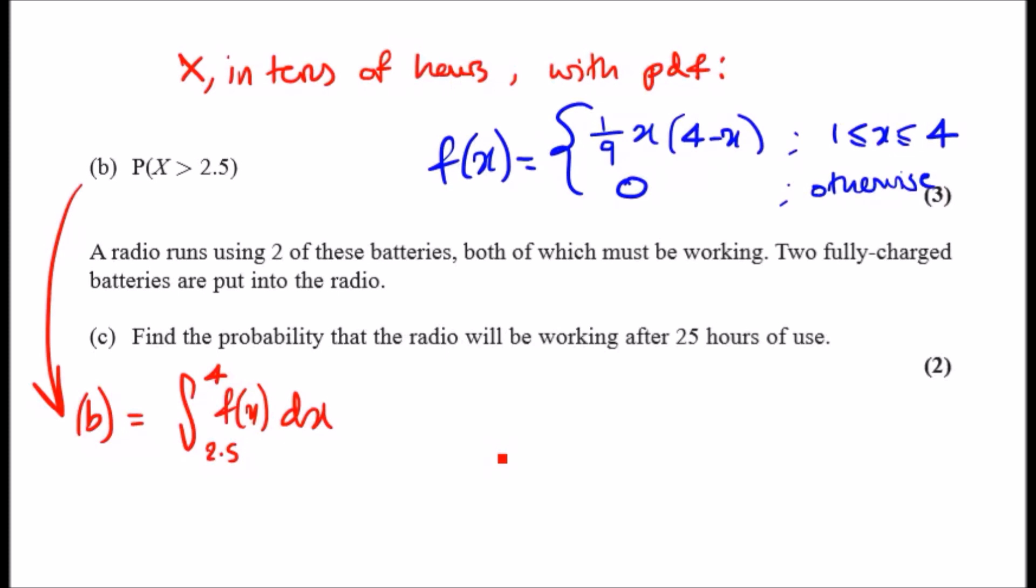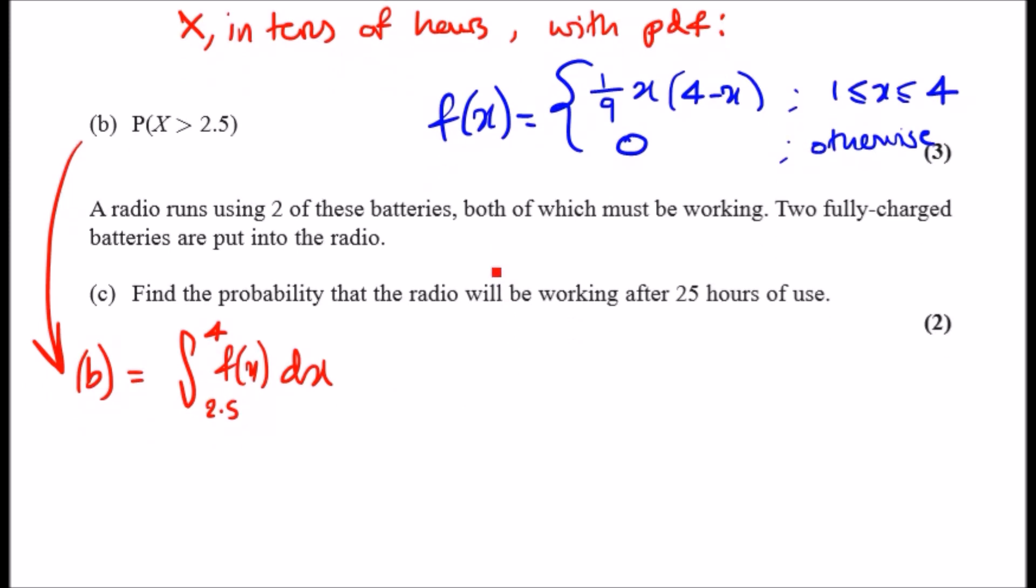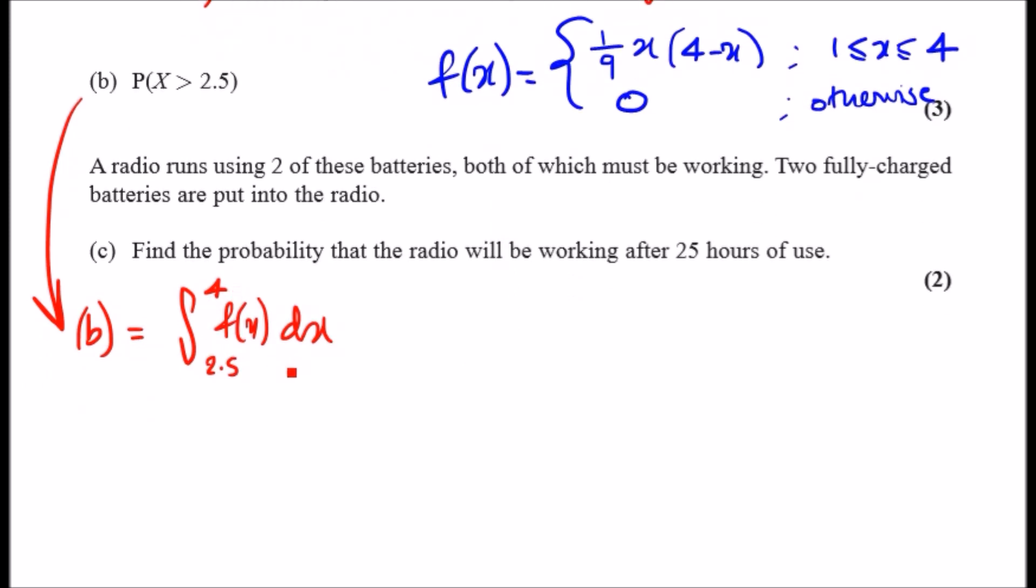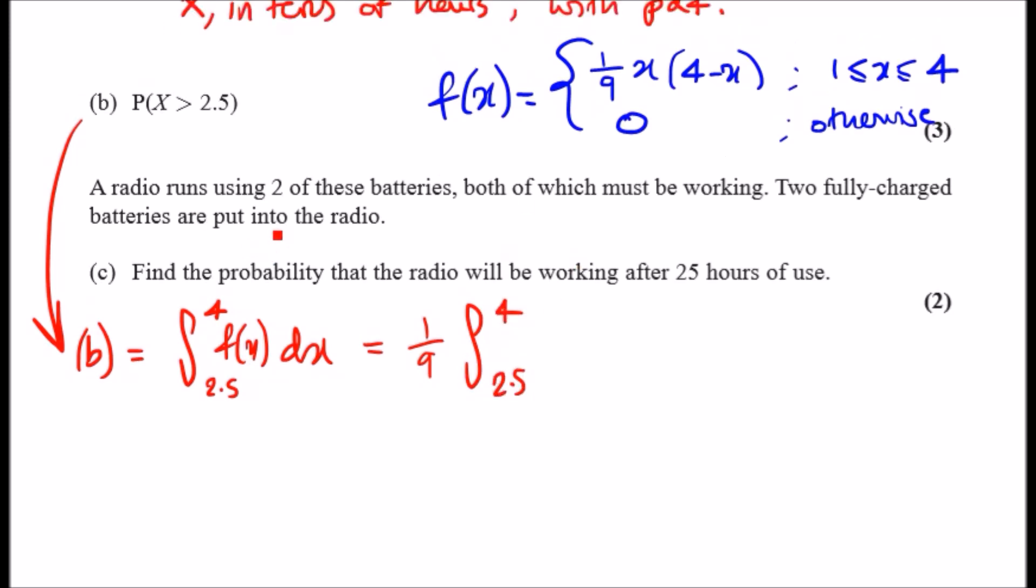The solution for b is simply the integral of the density function from 2.5 to 4. We just pick this value: 1/9 times (4-x), plug in and solve. A nice trick—take the 1/9 outside like we did for part a. You'll have the integral from 2.5 to 4. Simplify: x times (4-x) would be 4x minus x².